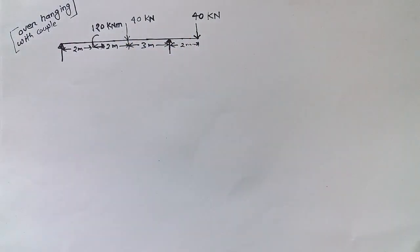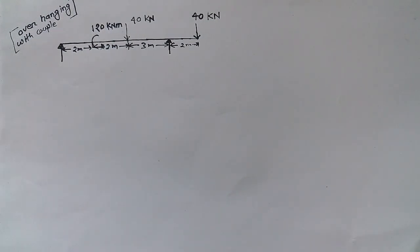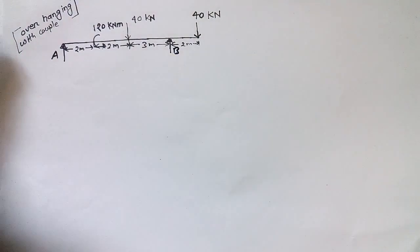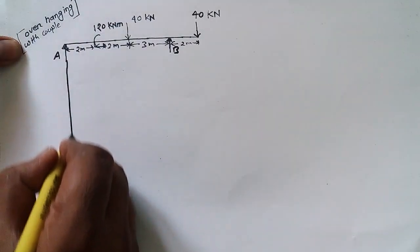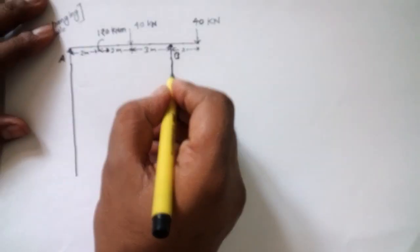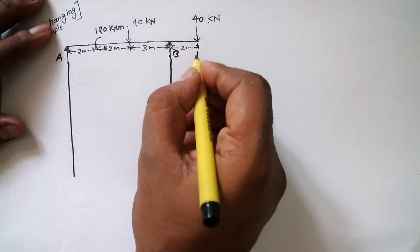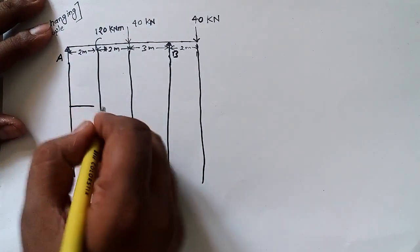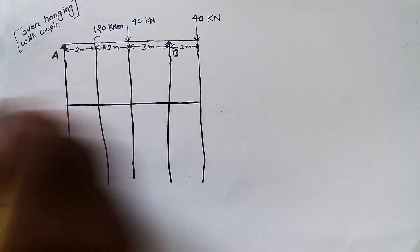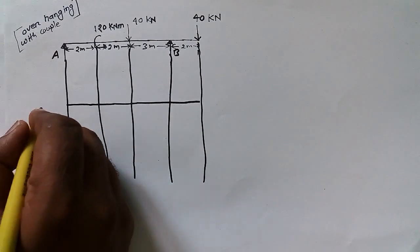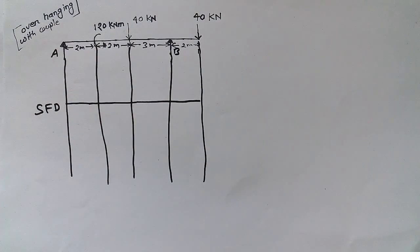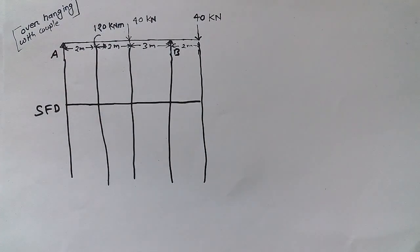In the case of an overhanging beam, this is important. To solve this type of problem we have to name the two supports — here we have two supports, A and B. I will extend this support so it will be easier to draw the shear force diagram and bending moment diagram. Where we are having a load, we'll just extend a line and draw a horizontal line.